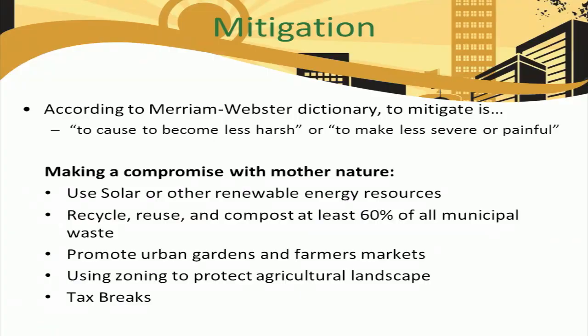In order to mitigate or reduce the negative effects of urban runoff in aquatic ecosystems, it is necessary to make a compromise with Mother Nature. To do this, engineers and construction companies typically implement mitigation features into infrastructure design. Mitigation efforts may include things like utilizing solar or renewable energy resources, repurposing municipal waste, incorporating urban gardens or green roofs into new and pre-existing infrastructure, using zoning to protect the agricultural landscape from urbanization, and allotting tax breaks for implementing environmentally conscious practices.